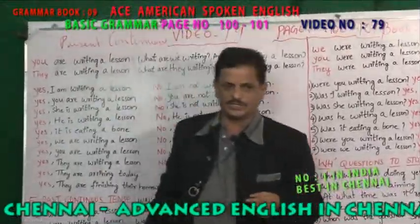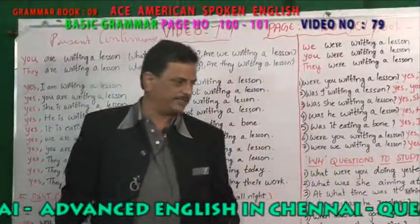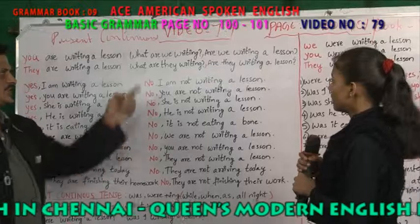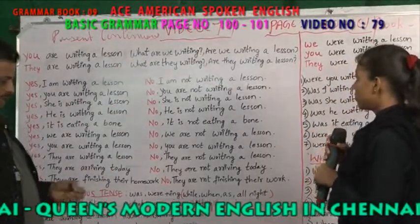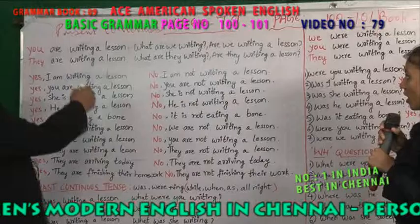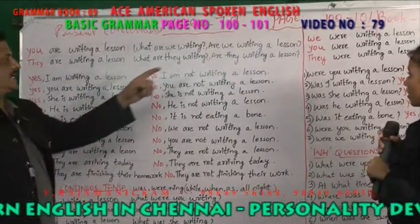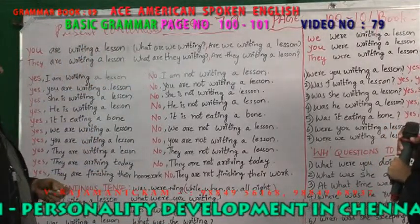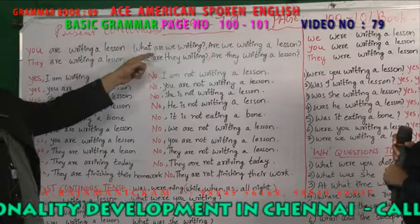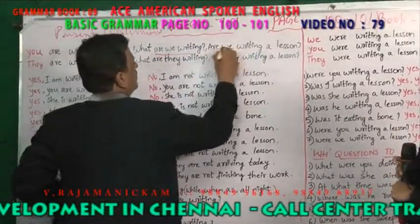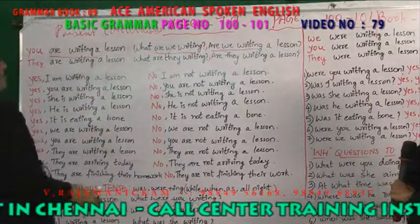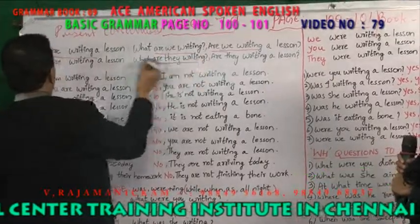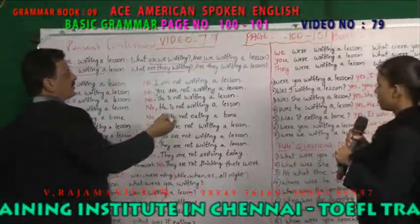When you ask a question in present continuous, the answer should be in present continuous. For example: What are we writing? The answer is: You are writing a lesson. What are they writing? The answer is: They are writing a lesson.